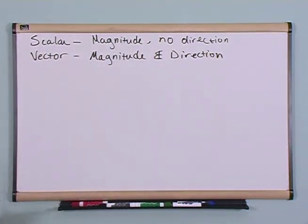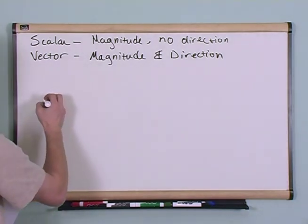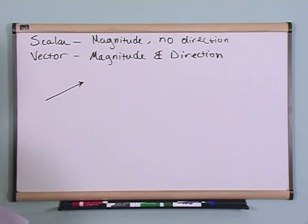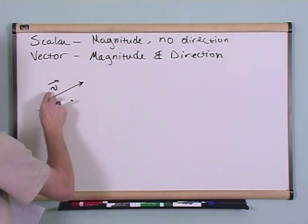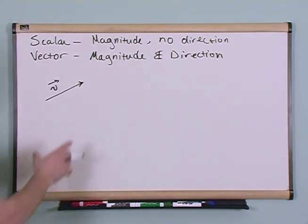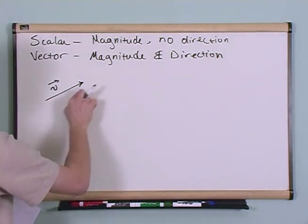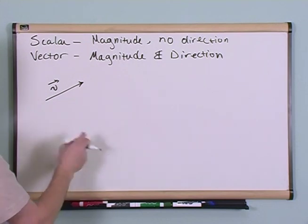So how do we represent vectors in physics? We generally represent a vector as an arrow. So this is some vector and I'll put a little arrow over the top to designate the fact that it's a vector. What this represents is the length of the arrow is the magnitude, and then of course the direction is just whichever way it's pointing.